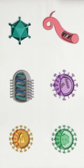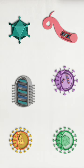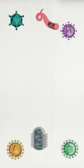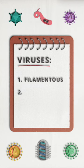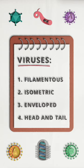Viruses can come in all shapes and sizes, but scientists typically classify viruses into four main groups based on these characteristics. These groups are filamentous, isometric or icosahedral, enveloped, and head and tail.